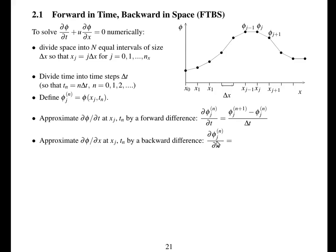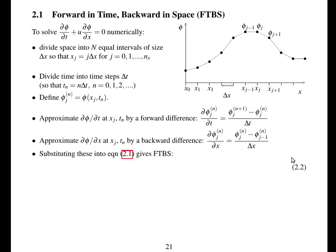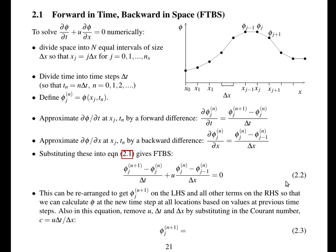In space, we calculate the gradient d phi by dx using a backward difference: d phi by dx at position j equals phi at position j minus phi at position j-1, divided by delta x. We substitute both of these into the advection equation, giving us the forward in time, backward in space scheme. This can be rearranged to give phi_j at time n+1 on the left-hand side and everything else on the right-hand side, meaning we can step forward in time.